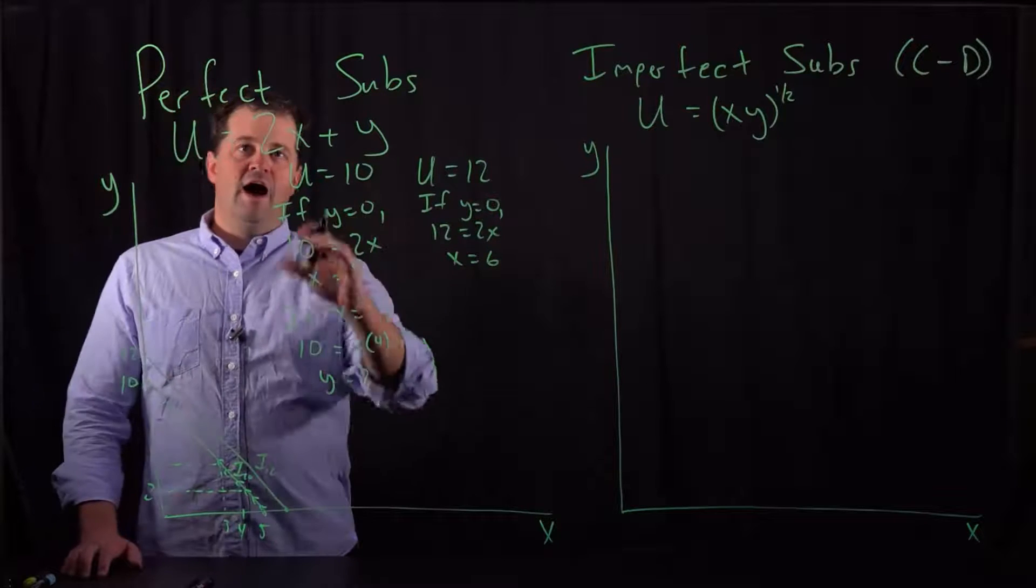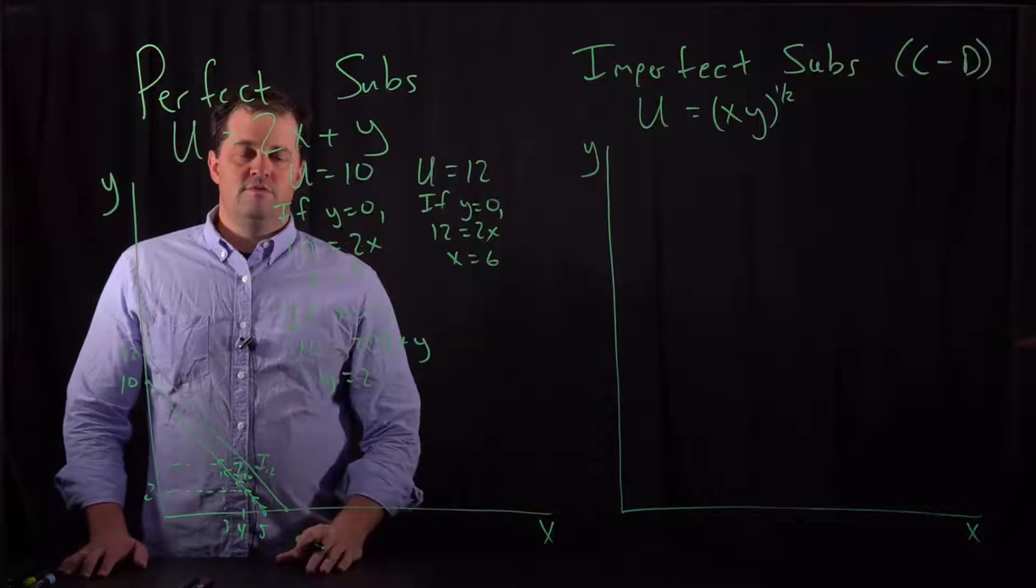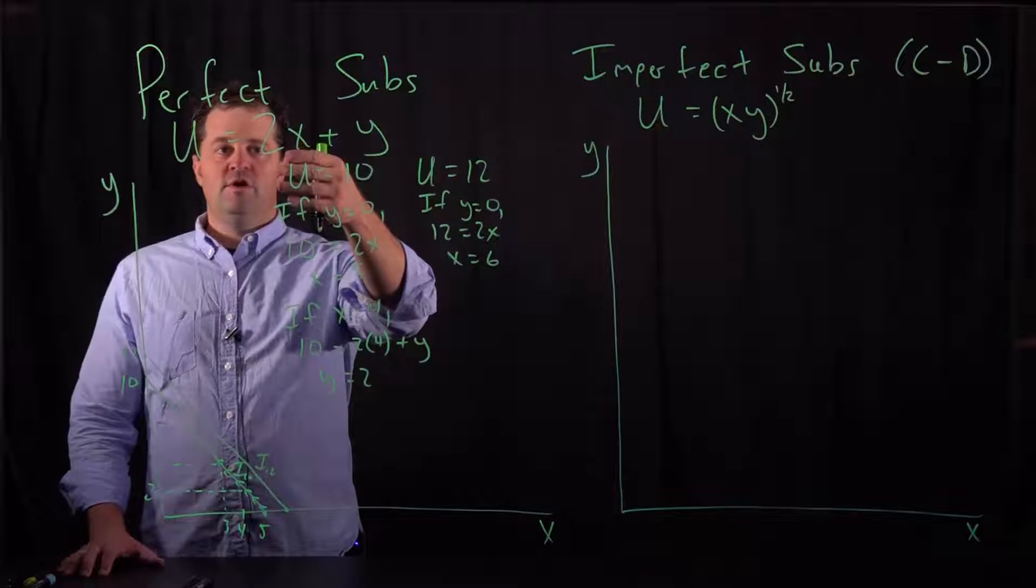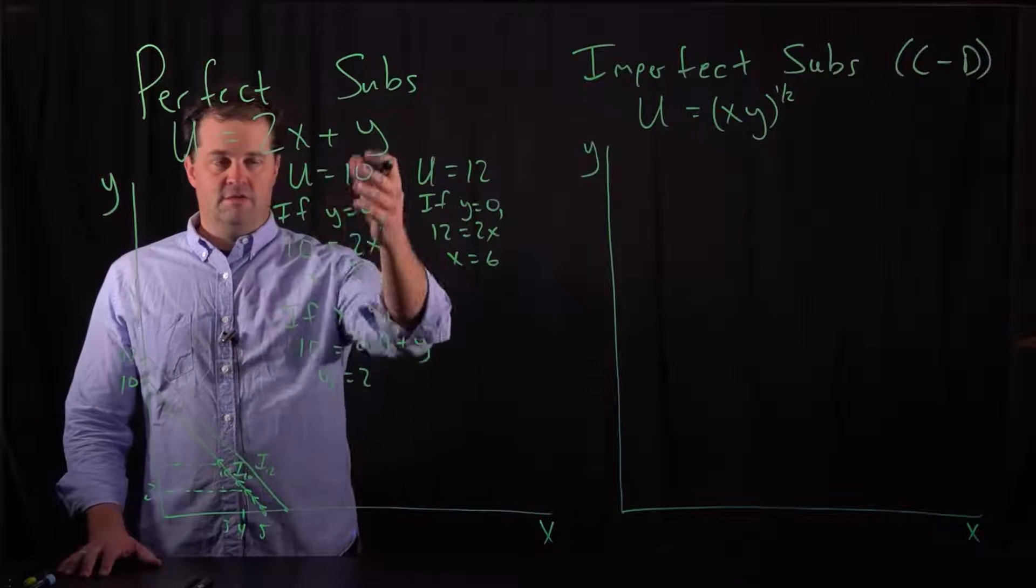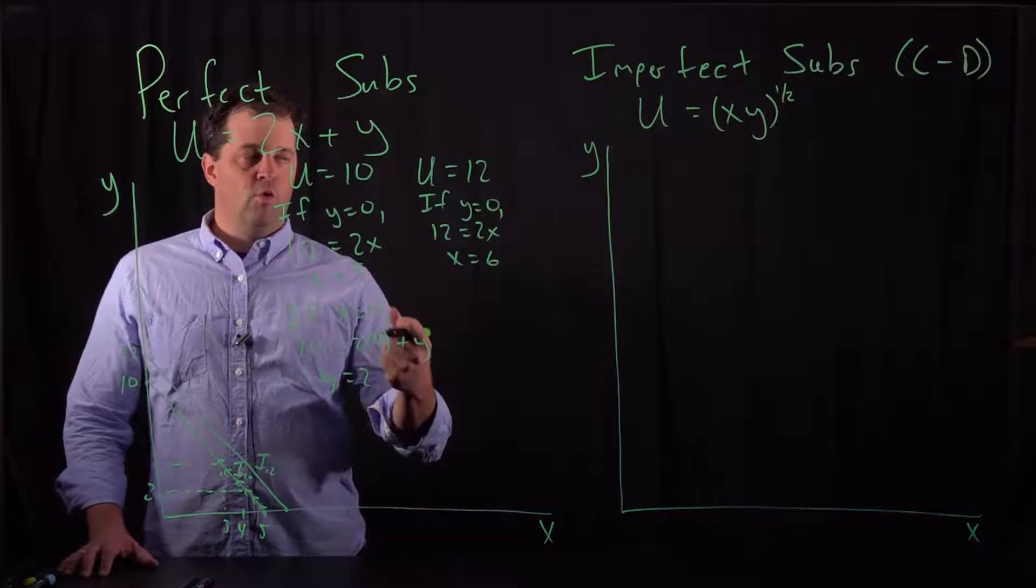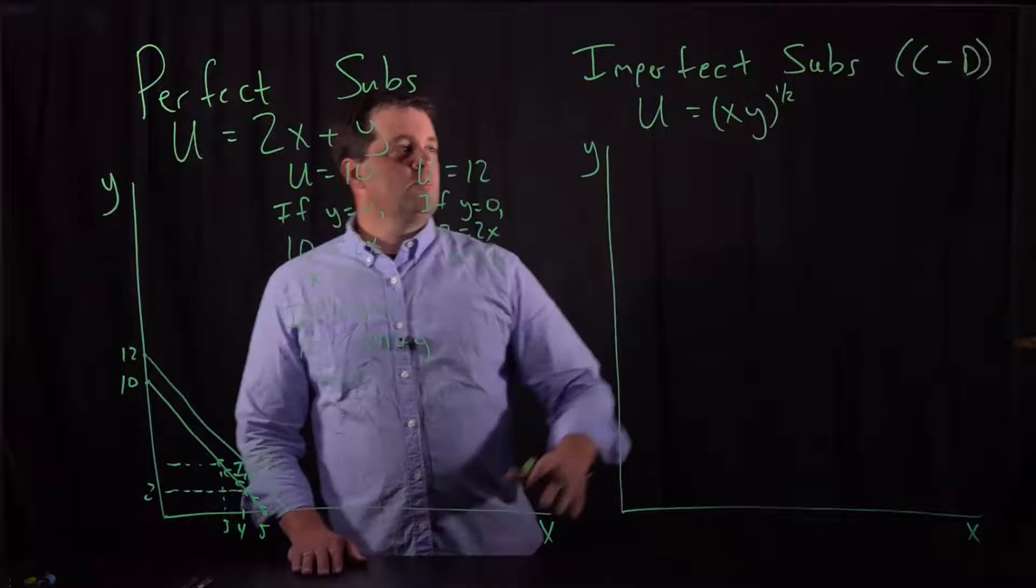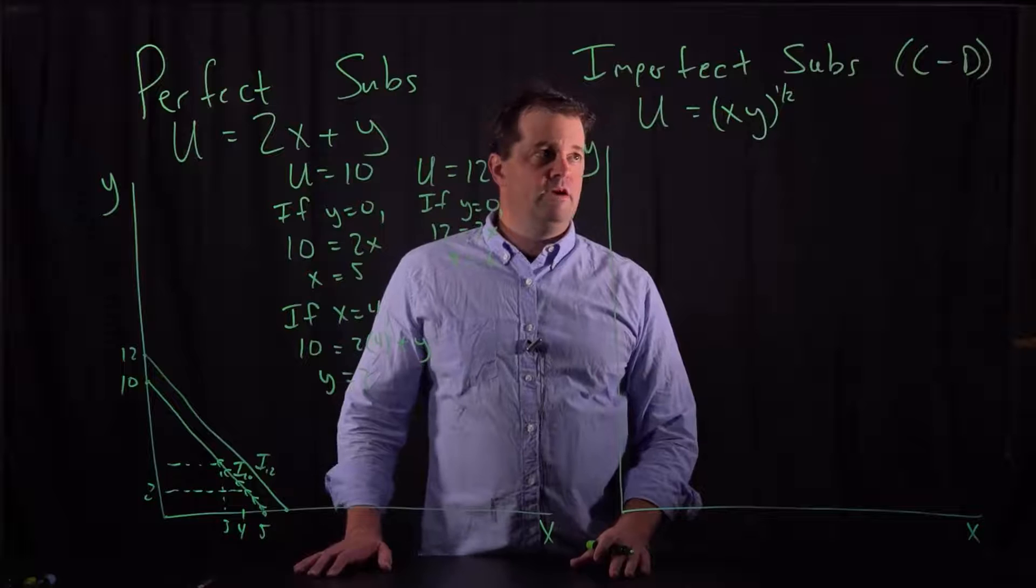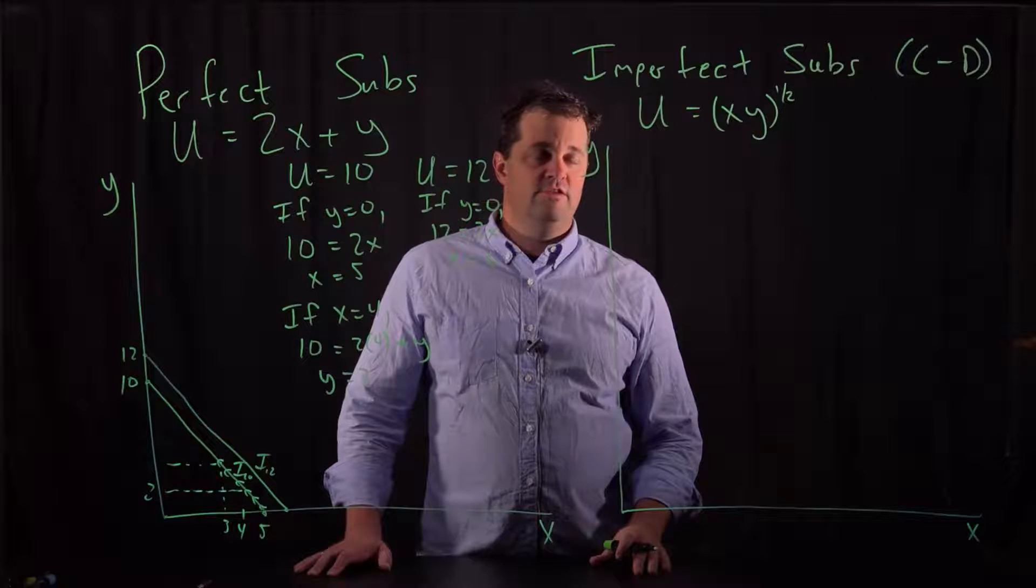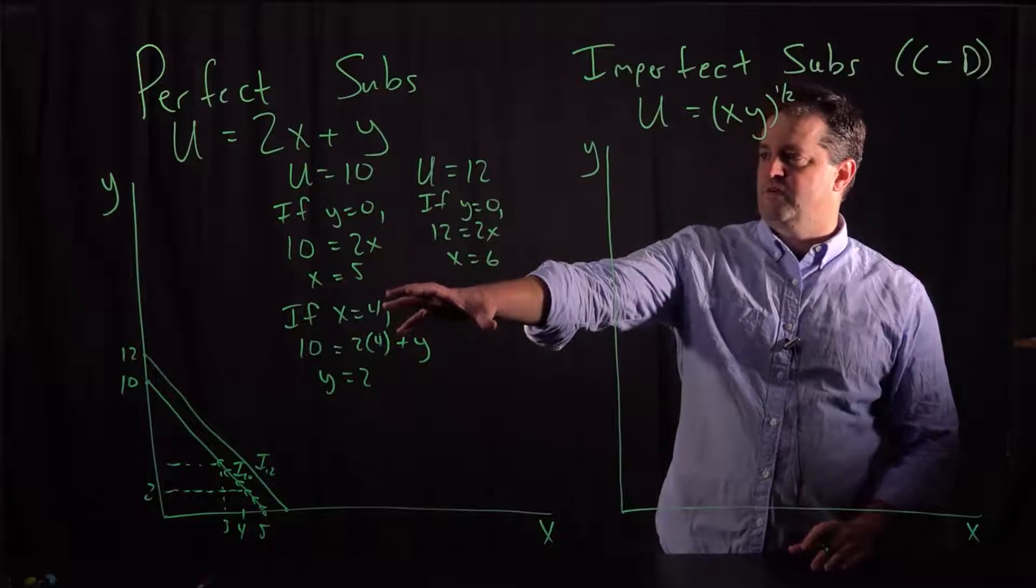So again, the odd thing about perfect substitutes is that there's no decreasing marginal utility from consuming more and more X. Every time I give this consumer a unit of X, utility changes by the same amount, same with Y. And that doesn't really comport with reality. Usually we value more and more goods, less and less. And that's why we want to think about the imperfect substitute model where we'll use a Cobb-Douglas, the famous Cobb-Douglas utility function, and think about generating indifference curves with this kind of function.